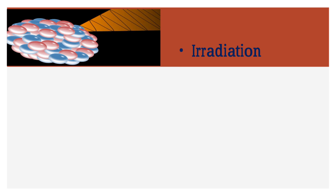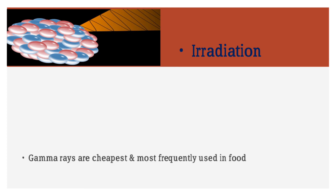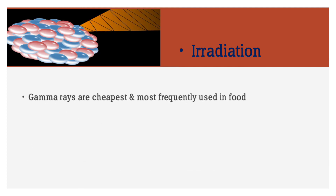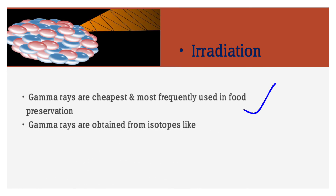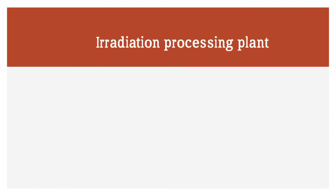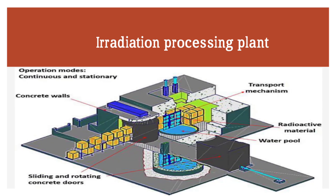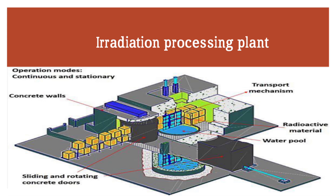Irradiation is an important technical method of meat preservation, practiced using gamma rays, which are the cheapest and most frequently used. Gamma rays are obtained from isotopes like cobalt and cesium to irradiate the meat. The irradiation processing plant has concrete walls, a transport mechanism, radioactive material, a water pool, and sliding rotating concrete doors, and is completely environmentally controlled to prevent environmental degradation.